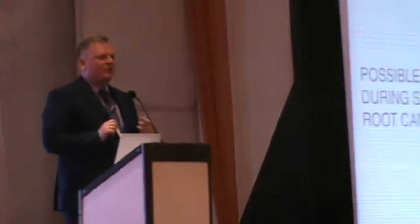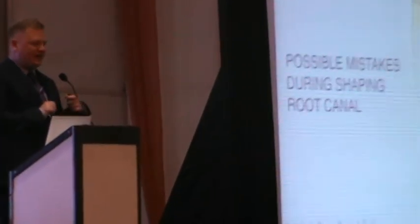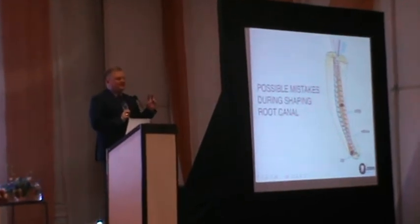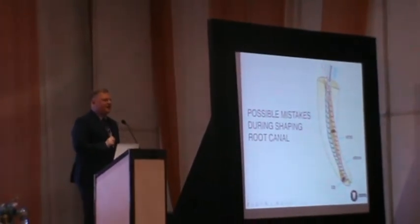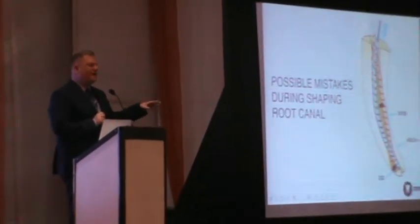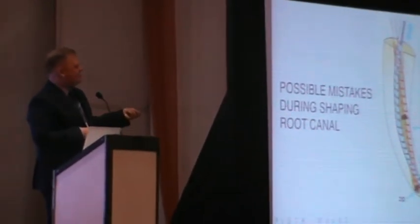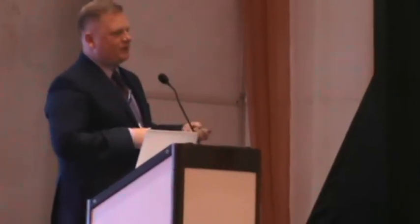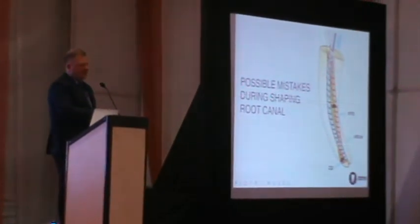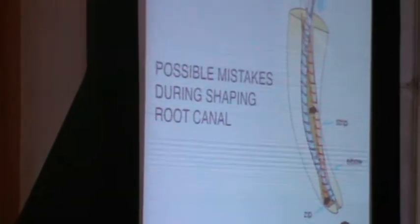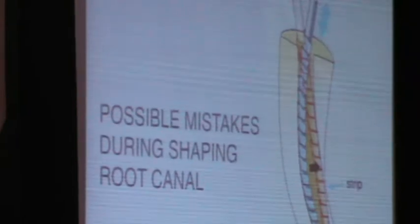While working with hand files, we can create mistakes, especially when we are not pre-bending stainless steel hand files. When working with quite stiff and large sizes — for me, large starts at size 25 (ISO 25, 30, 35, 40), they are quite stiff — they can create strip perforation on the internal curvature of the canal. They can also create what I call a cold elbow: the situation where the main constriction of the canal is not at the end of the canal but a few millimeters above. This can cause clinical problems, especially with obturation.